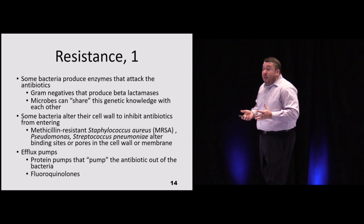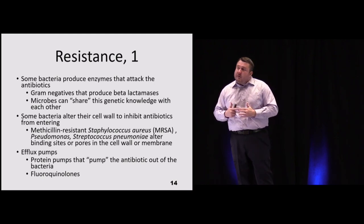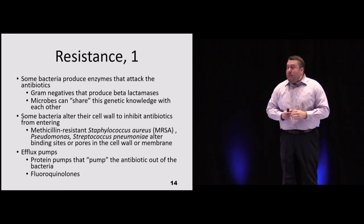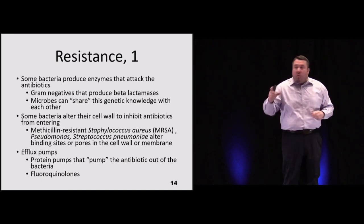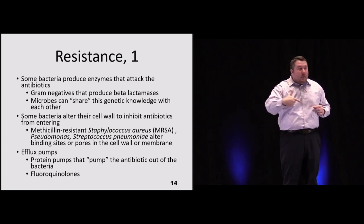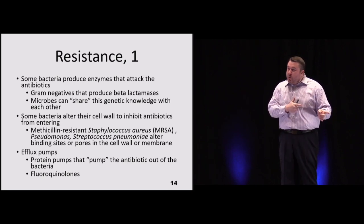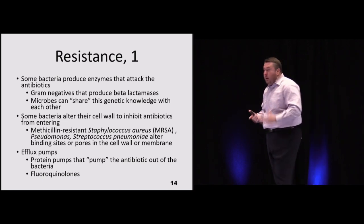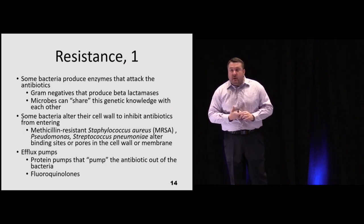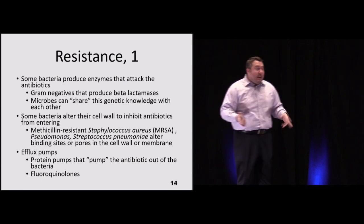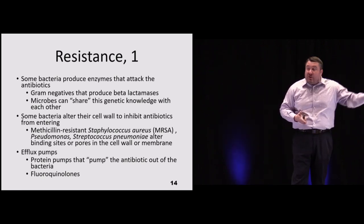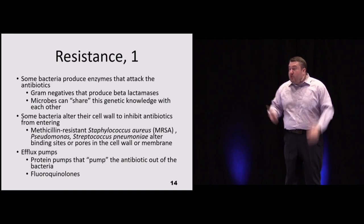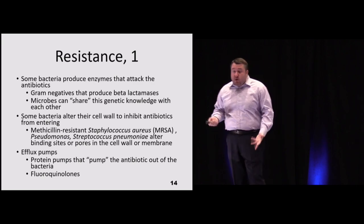Bacteria also share genetic information. Studies placing a susceptible E. coli next to a resistant one under an electron microscope show fimbriae extending out; the resistant organism shares its genetic information and over time the susceptible one becomes resistant too — just like we share information. That's why stewardship is so important. Additionally, some bacteria develop efflux pumps — particularly seen with fluoroquinolones — that actively pump the antibiotic out of the cytoplasm, preventing it from reaching minimum effective concentration.